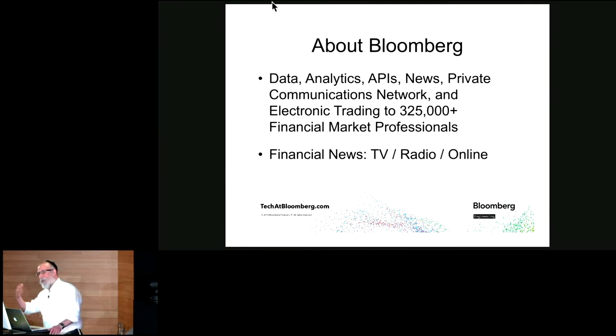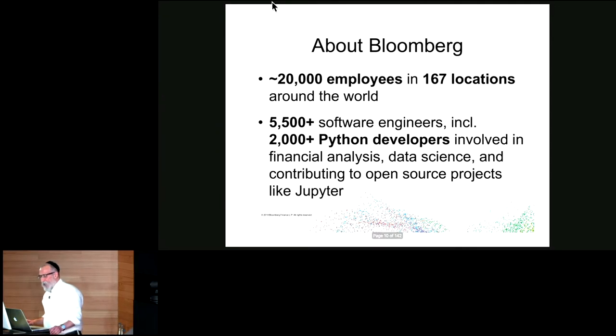A little bit about Bloomberg. We provide data, analytics, private communications network, and electronic trading to over 325,000 financial market professionals. And to the public we provide financial news in television, radio, and online. We have about 20,000 employees in 167 locations including London. Over 5,500 software engineers, and among them at least 2,000, probably more, are involved in Python in one way or another.